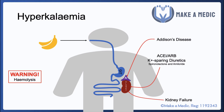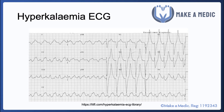An important thing to bear in mind is that a hemolyzed blood sample can cause a falsely high potassium result. This is because potassium is mainly an intracellular ion, so the bursting of red blood cells can release high concentrations of potassium into the sample and give an erroneous result. It's therefore important to correlate the potassium level with ECG findings and the clinical state of the patient. If you suspect the sample has hemolyzed, you should repeat it.